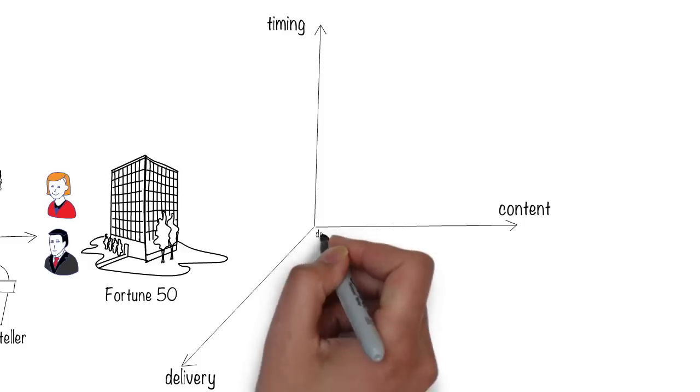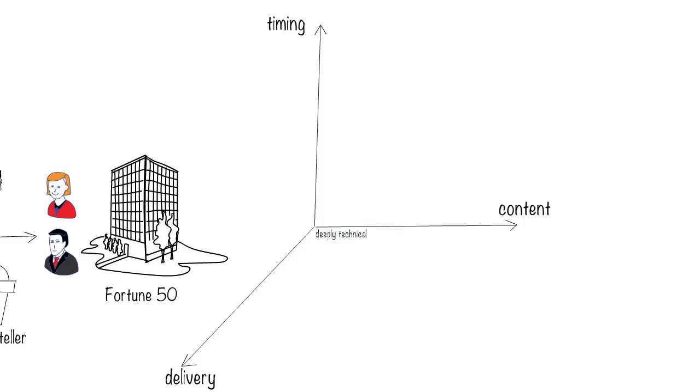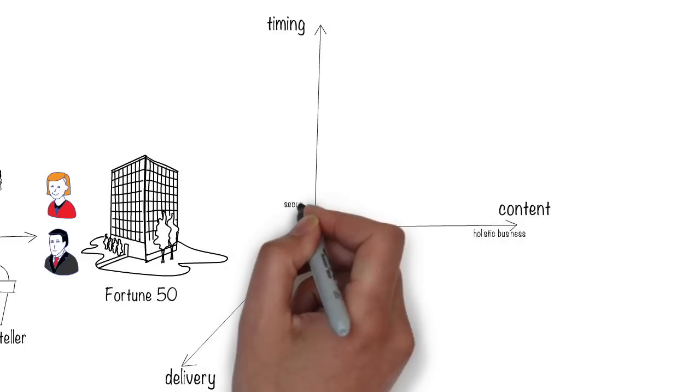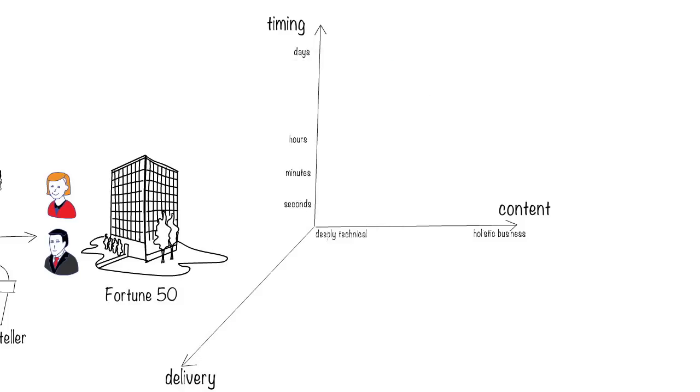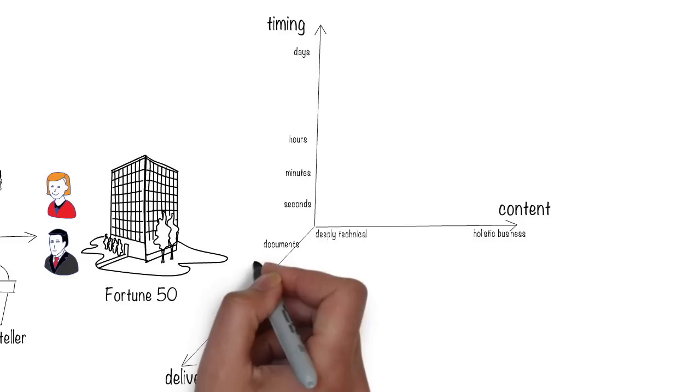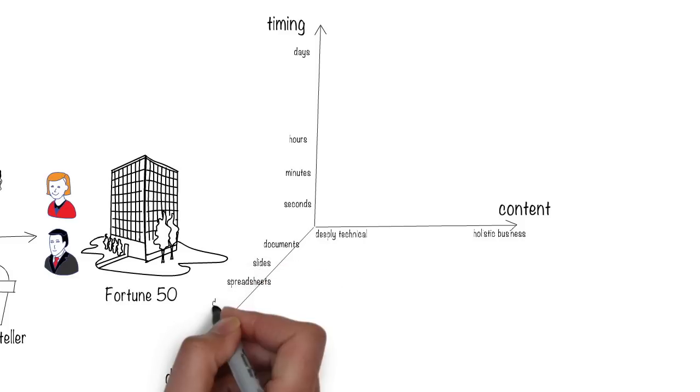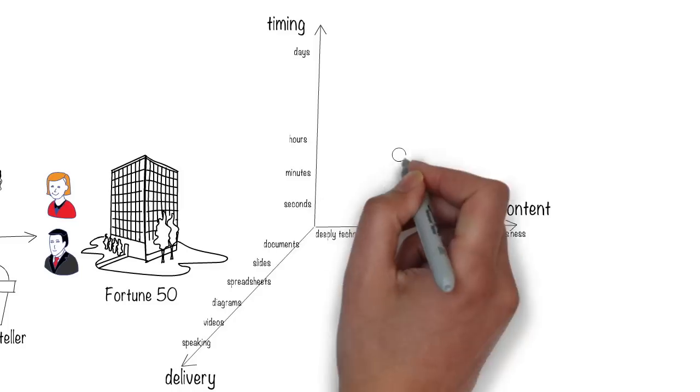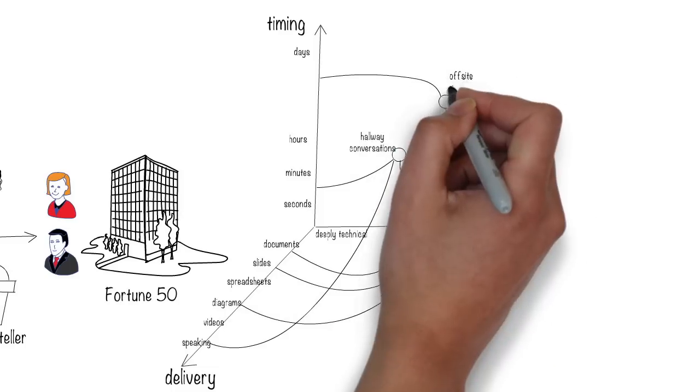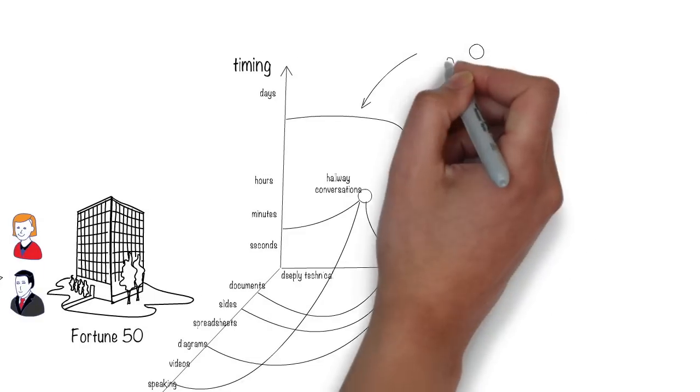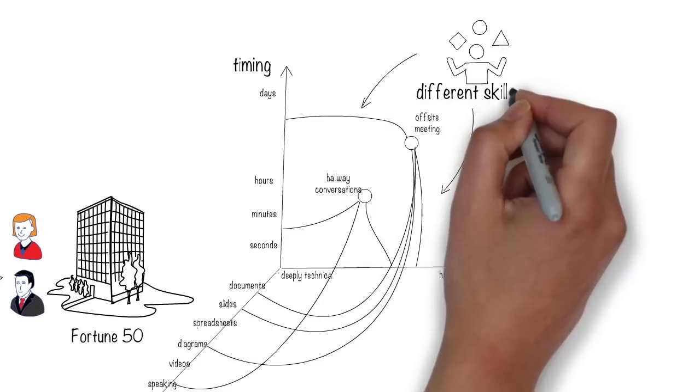On one axis we have different types of genres like mysteries, romance, suspense. For us business architects and technologists, those genres range from deeply technical to holistic business. On another axis you could have the timescale for communication ranging from a few seconds to a few days. On the delivery mode, you will find documents, slides, spreadsheets, diagrams, videos, and speaking among others. Hallway meetings usually last for about two minutes, and offset planning a couple of days.